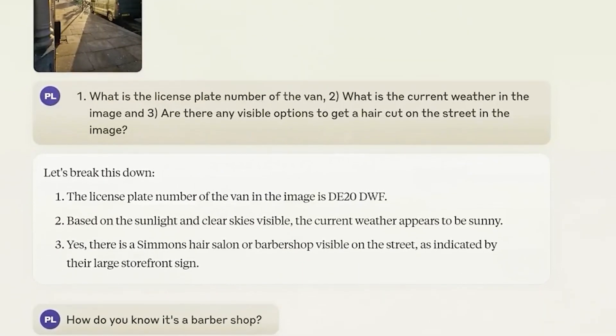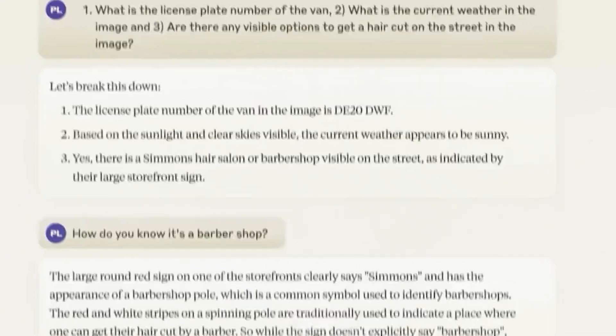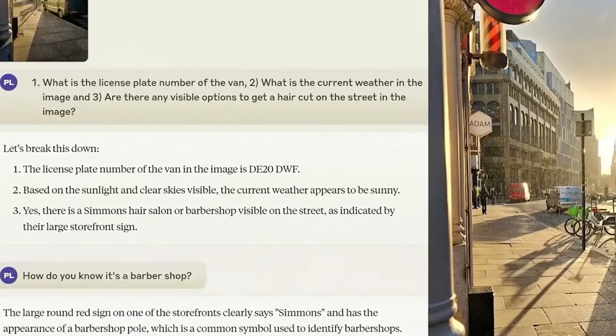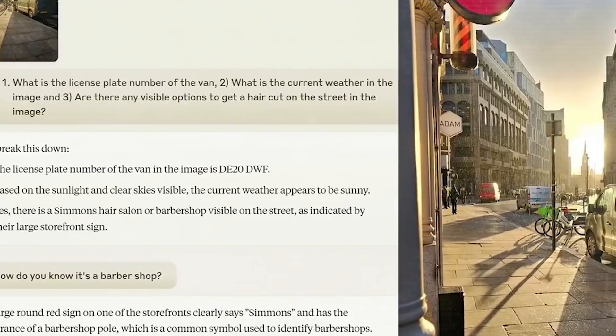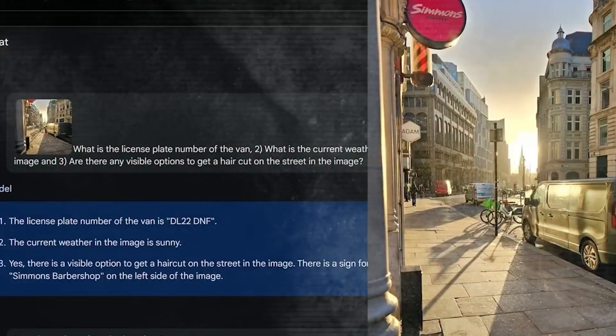In the past, some AI models would refuse to answer certain questions because they didn't fully understand the context. But Sonnet is better at this. It understands requests more clearly, knows when a request could cause harm, and is less likely to refuse to answer a harmless question.